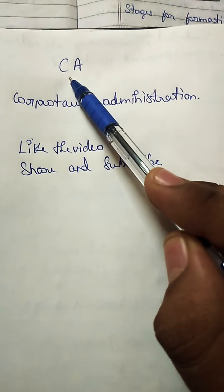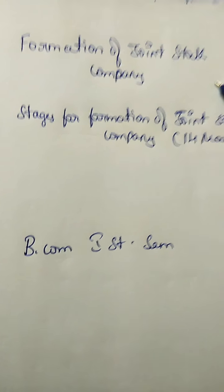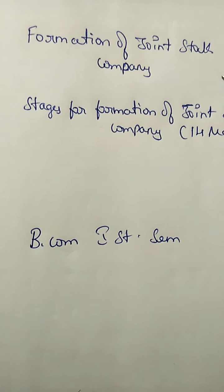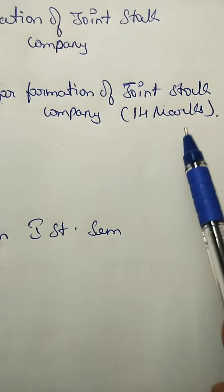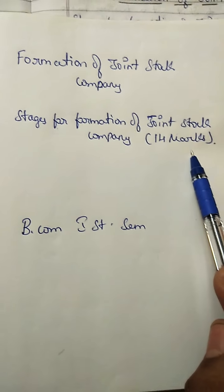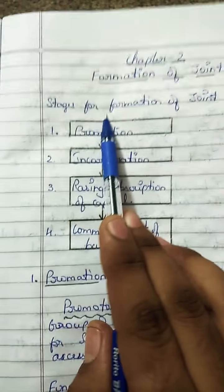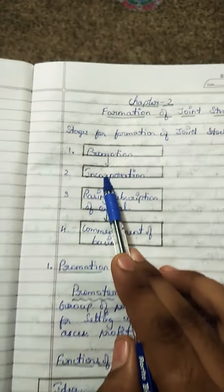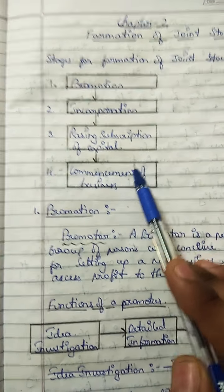Here we are going to learn CA Cooperative Administration. We have the formation of Joint Stock Company, and the stages for the formation of a Joint Stock Company, which is very important. The stages are: promotion, incorporation, raising subscription of capital, and commencement of business.